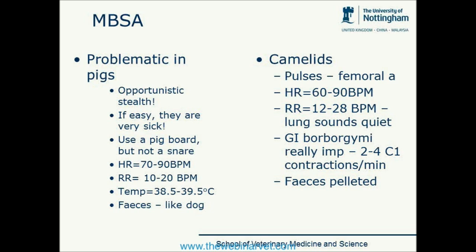Normal heart rate for pigs should be 70 to 90, respiratory rate 10 to 20, temperature a bit higher than in small animals at 38.5 to 39.5 degrees, and feces should be similar to a dog. In terms of weight, it depends on the type of pig — a normal sized pot-bellied pig or kune kune will be around 100 kilograms, whereas a full-grown standard pig might be anything up to 350 kilograms.